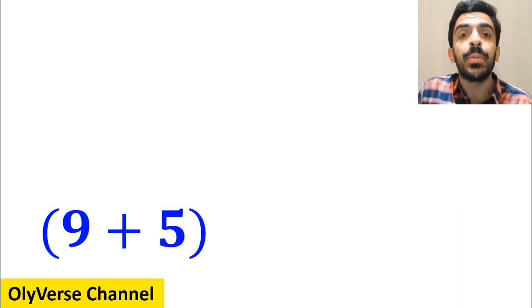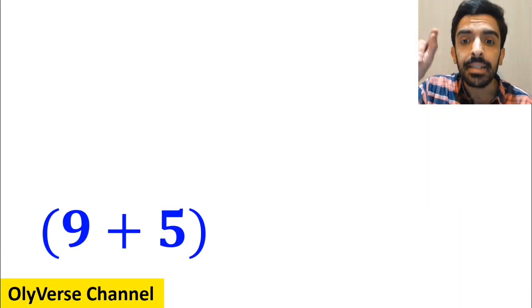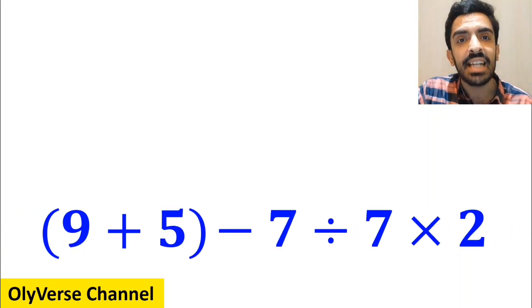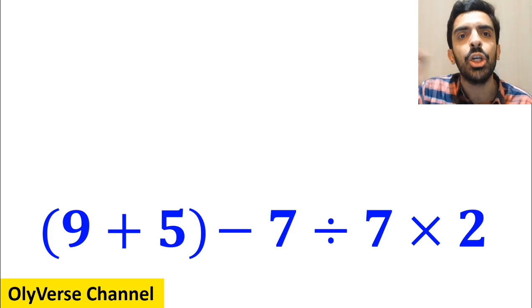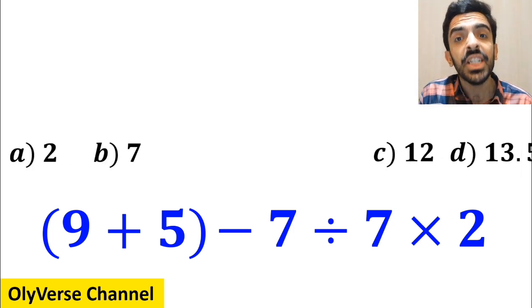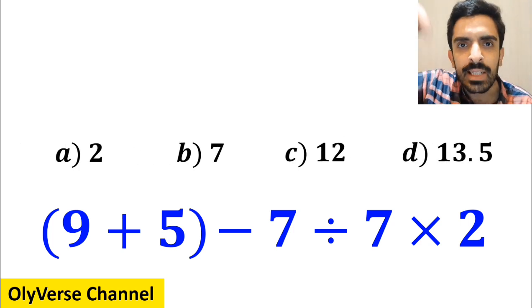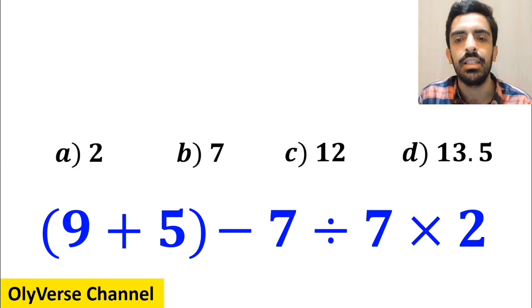What is the value of the expression 9 plus 5, inside the parentheses, then minus 7, divided by 7, times 2? Which option do you think is the correct answer to this question?